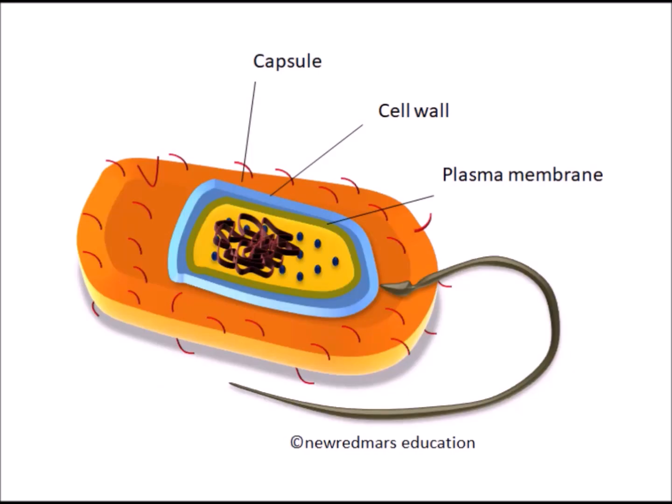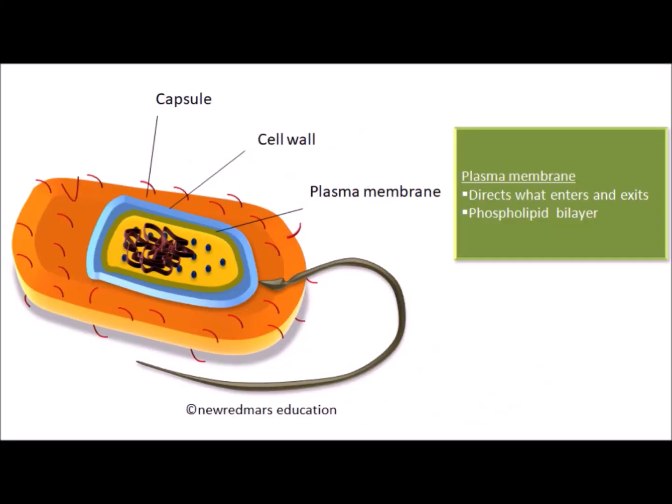Today's topic is Gram-positive vs Gram-negative bacteria and Gram stain. Here is a typical diagram of bacteria. The three-layered bacteria have an innermost yellow-colored plasma membrane which helps in membrane transport. It is made up of a phospholipid bilayer in which some proteins are scattered in between.